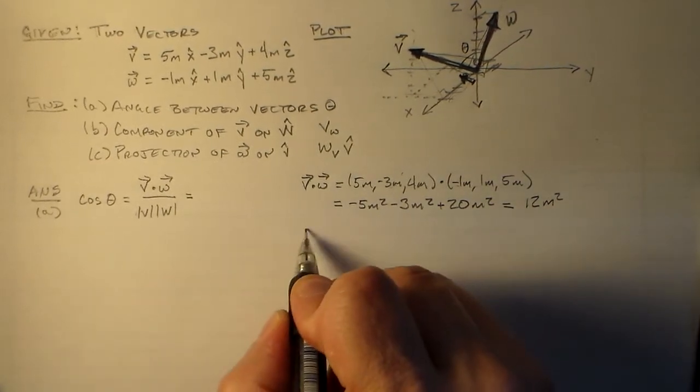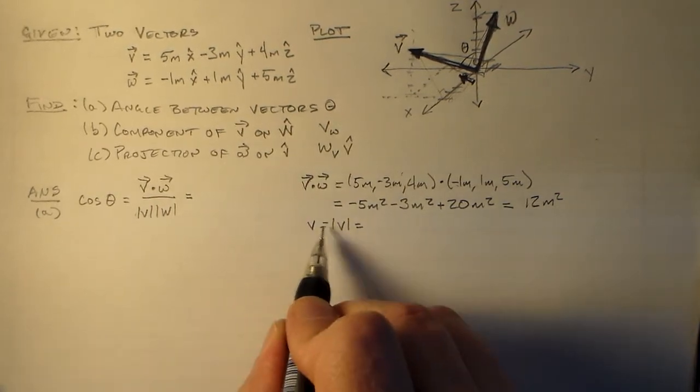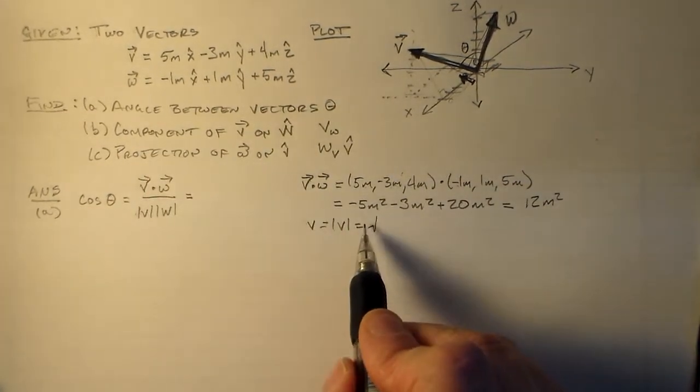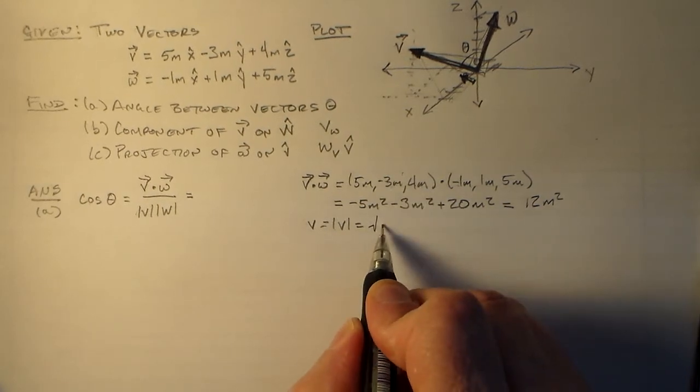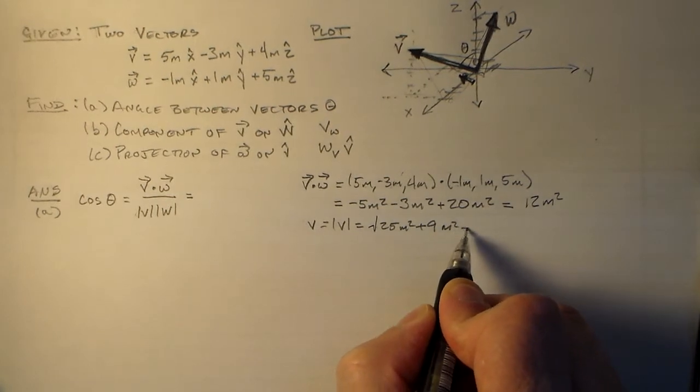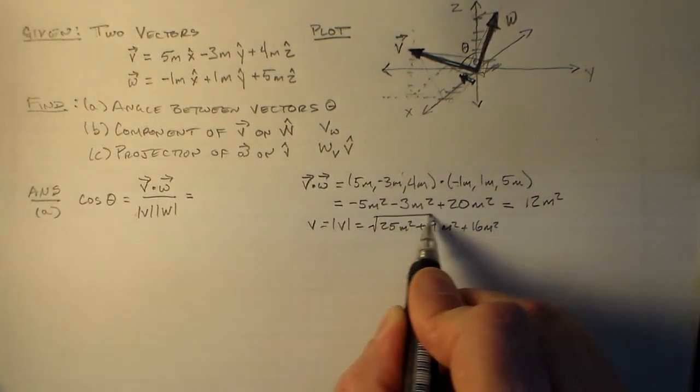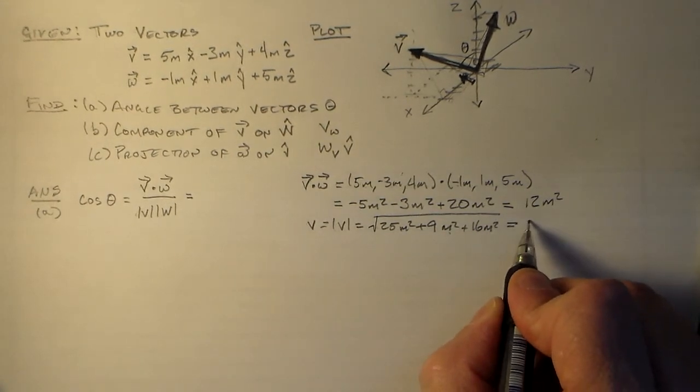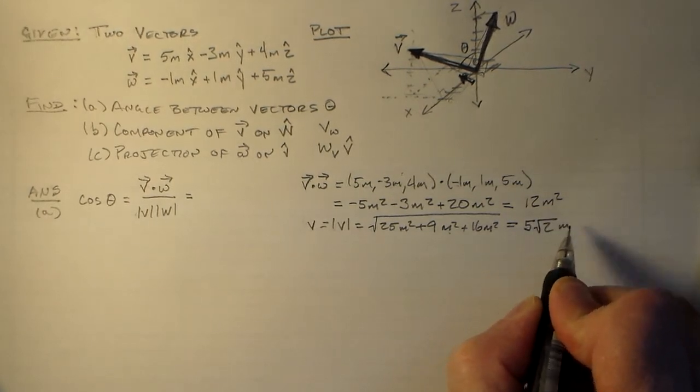And then the magnitude of v, you come through here and you just add the squares and then take the square root. So that's 25 square meters plus 9 square meters plus 16 square meters. That's 25 plus 25, that's 50. The square root of 50 is 5 times the square root of 2, and that's meters.